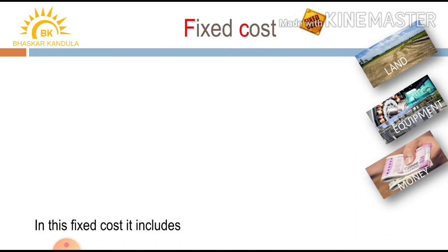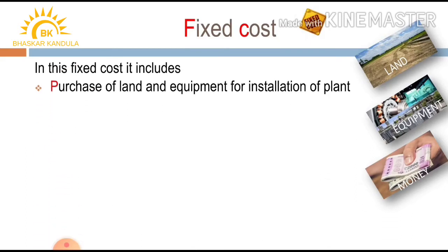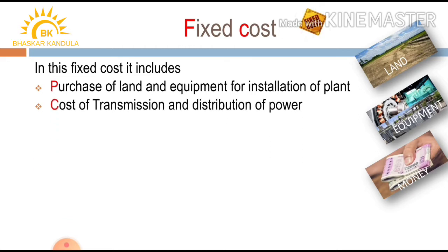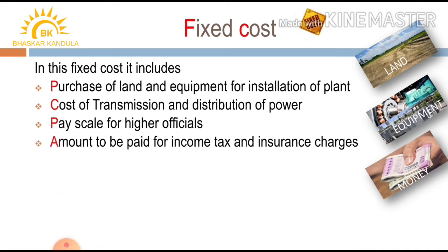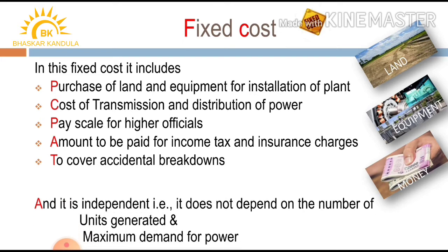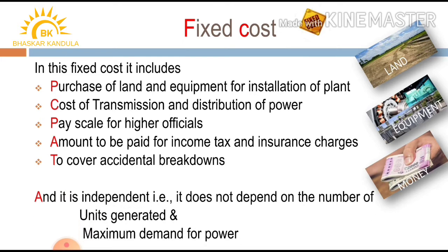Fixed cost includes purchase of land and equipment for installation of plant, cost of transmission and distribution of power, pay scales for higher officials, amount to be paid for income tax, and insurance charges to cover accidental breakdowns. It is independent — it does not depend on the number of units generated or maximum demand for power.